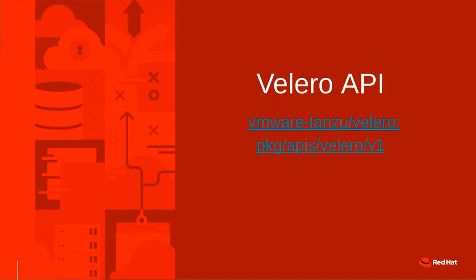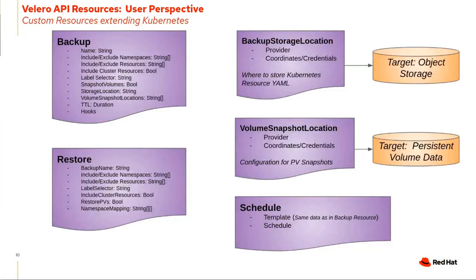The Velero API exposes five major custom resources. The backup CR describes a backup of an application or set of applications. It allows granular specifics — you can use a label selector to grab everything with a given label, including PV data and internal images. You can scope it to a set of namespaces and it will intelligently grab every namespace-scoped resource and any cluster-scoped resources referenced by those namespaces, plus storage location and options for cluster resources.